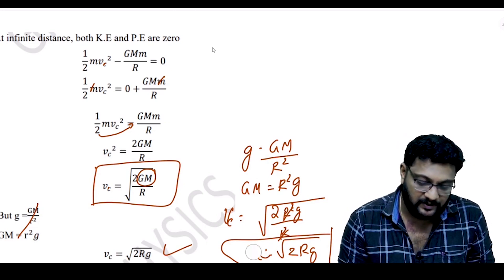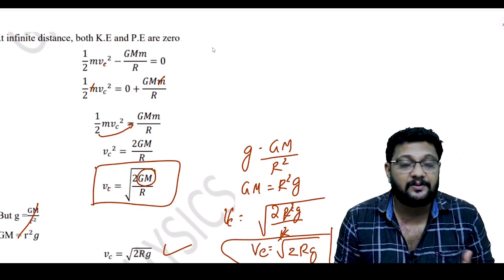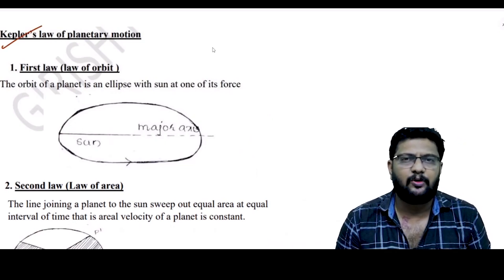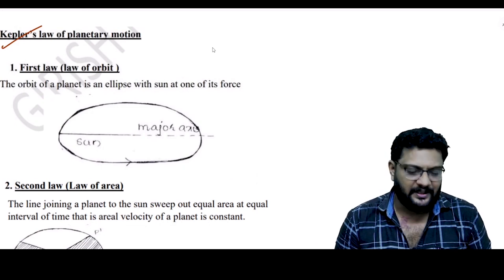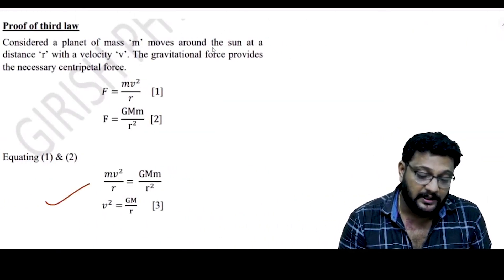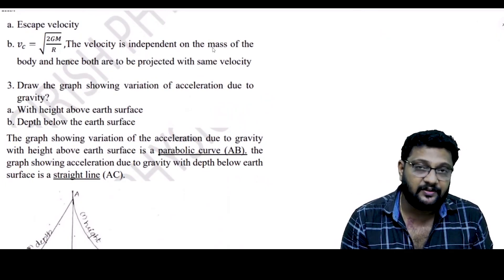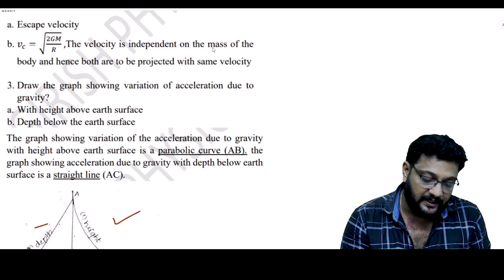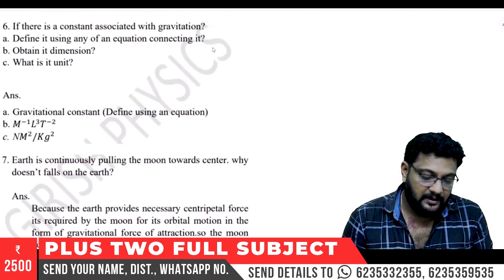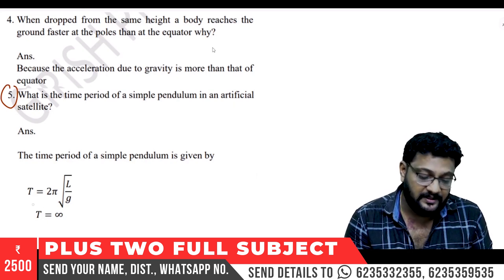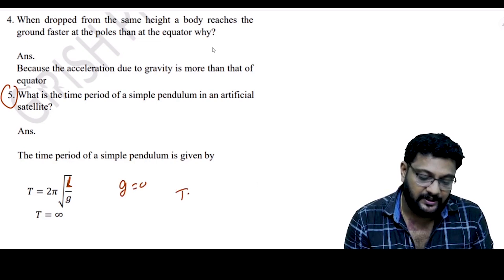To summarize key formulas: orbital velocity v₀ = √(Rg); escape velocity vₑ = √(2Rg). Kepler's laws include the law of orbits (first law), law of areas (second law), and the harmonic law (third law: T² ∝ R³). The time period of a simple pendulum is T = 2π√(L/g); at g = 0, T = infinity.